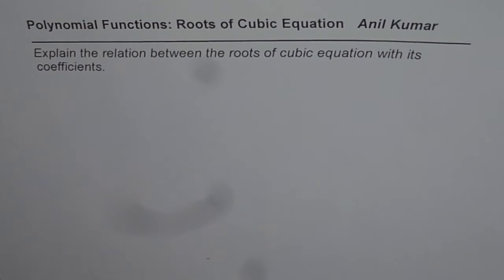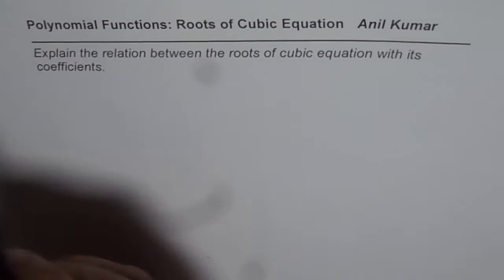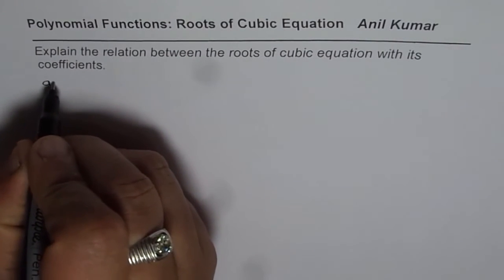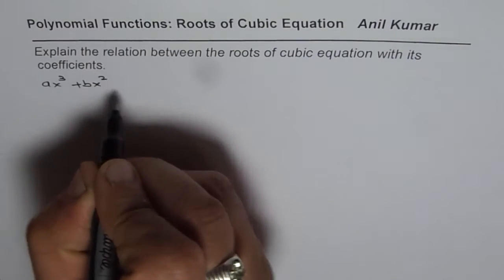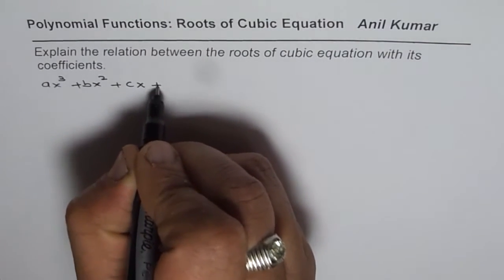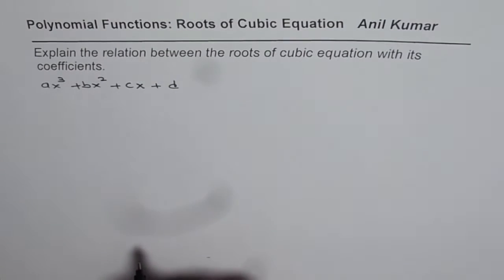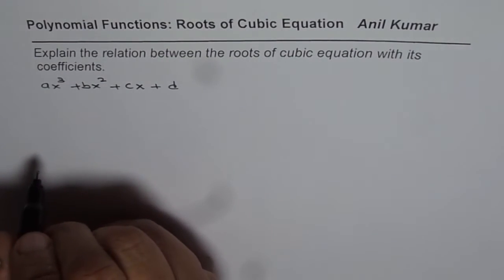Question here is explain the relation between the roots of cubic equations with its coefficients. What I am trying to say here is that a cubic equation could be written as ax³ + bx² + cx + d. So that is how we could write a cubic equation.